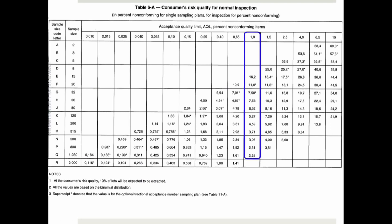In the standard, there's also a table showing that the consumer's risk is that 10% of lots will be accepted even though they are above the AQL — even though the proportion of defects exceeds the AQL. So if your AQL is 1%, in theory you don't want a batch with more than 1% defects. But with a sample size of 200, you might receive some batches with more than 4% defects. That should be a shock to many buyers.